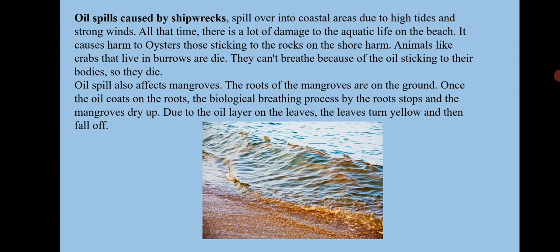Oil spills also affect mangroves — the plants that grow in water with their roots in the ground. Once oil coats the roots, the biological breathing process of the roots stops and the mangroves dry up because they cannot breathe. There is no exchange of carbon dioxide and oxygen in the plant because the oil blocks this process.